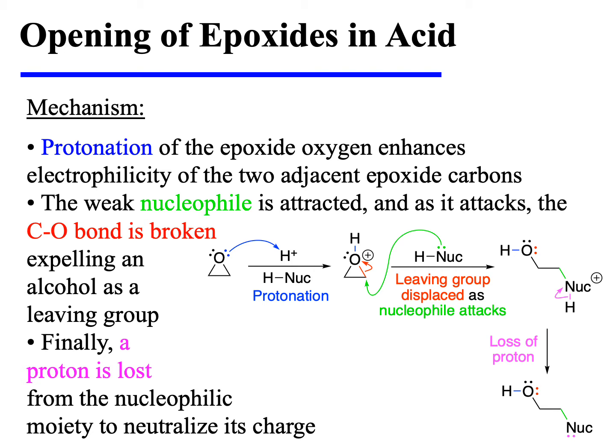The mechanism begins with protonation of the epoxide oxygen. This, in turn, enhances the electrophilicity of the two adjacent epoxide carbons. The weak nucleophile is attracted to one of these carbons, and as it attacks, the C–O bond is broken, expelling an alcohol as a leaving group. Finally, a proton is lost from the nucleophilic moiety to neutralize its charge.